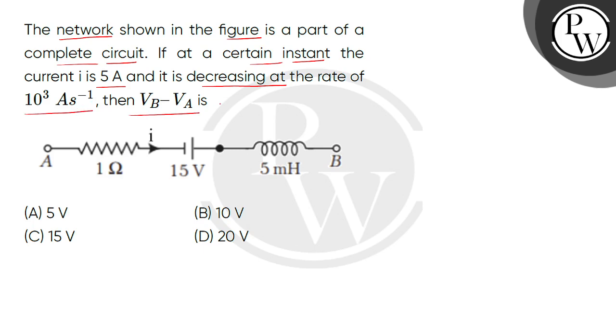In the diagram we have two endpoints with current direction from point A to point B. Now the current decrease rate is constant.